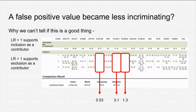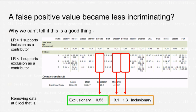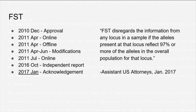A likelihood ratio above one is incriminating — the higher above one, the stronger the evidence. Below one is generally exculpatory. We identified that one of these locations actually had an exculpatory likelihood ratio. OCME had told FST to throw out certain types of data, and it turns out that sometimes that data is exculpatory. So they are removing information that supports the defense's theory without telling anybody — including the casework analyst running the system. For this particular sample, it is a false positive that the result is above one at all, yet in the 2010 validation study the statistic was as high as 157, which they're now claiming — after modifications — has no substantial impact.